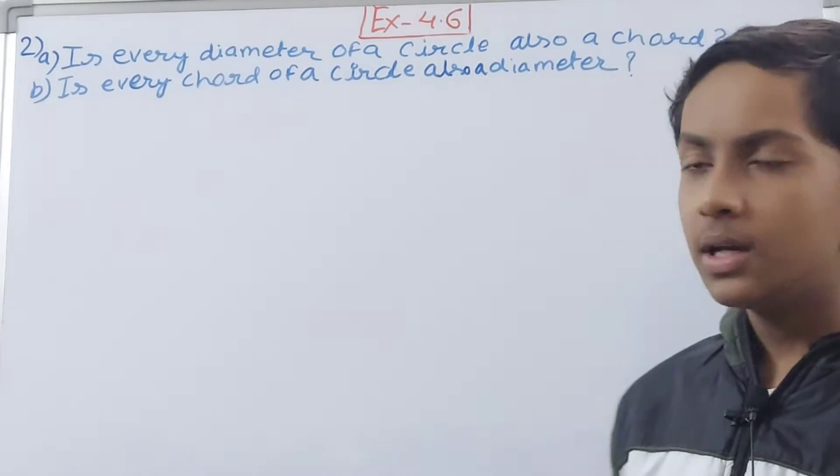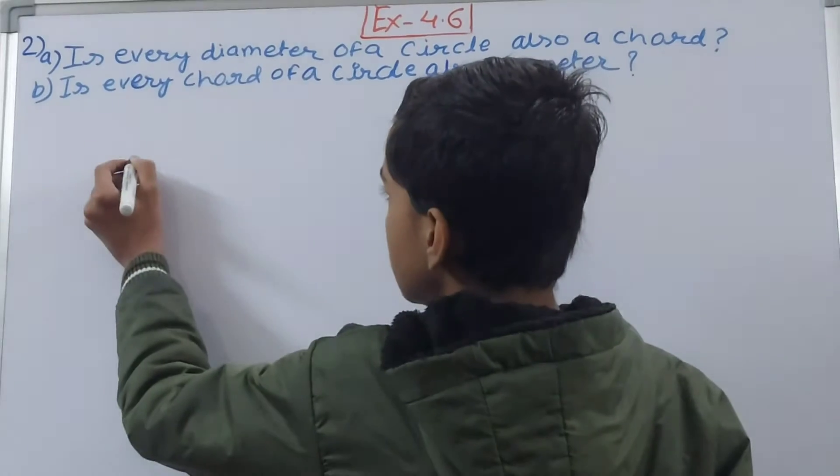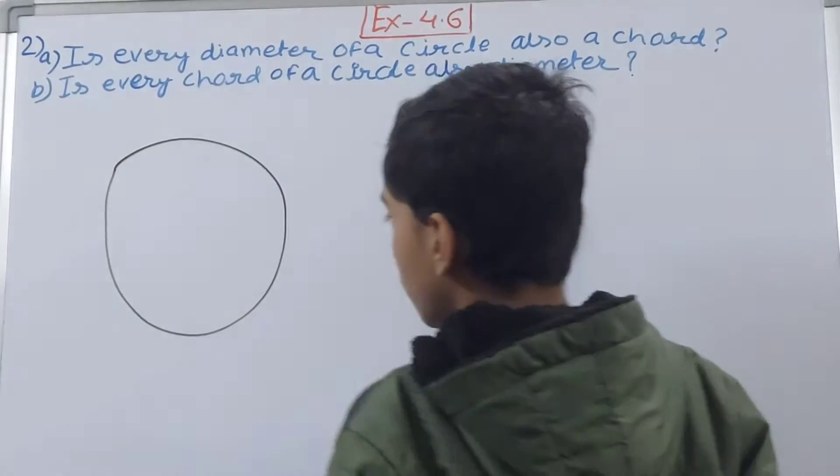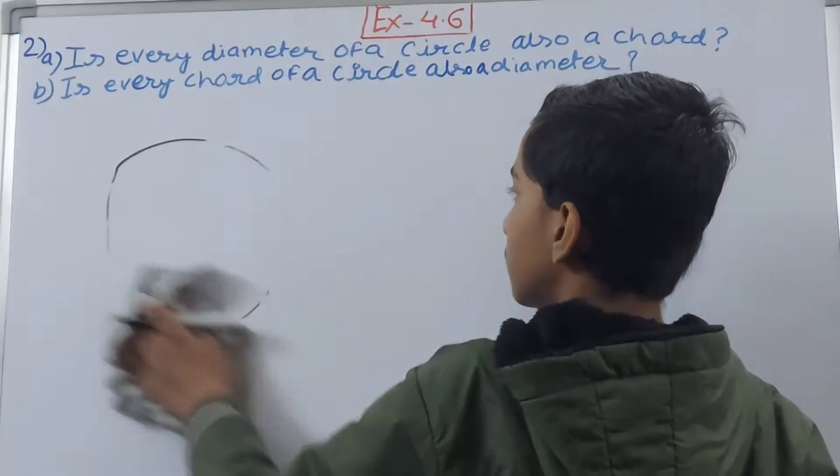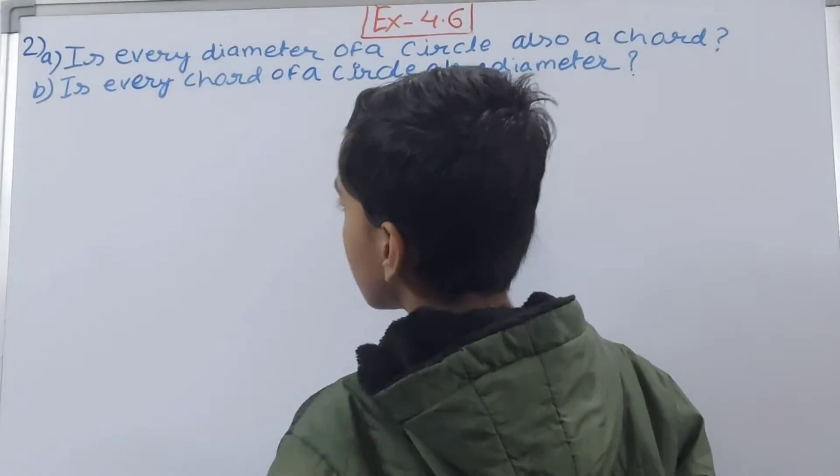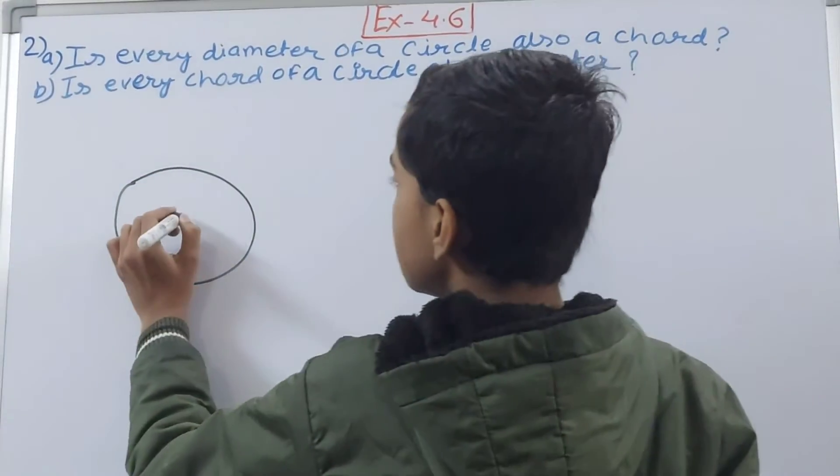First is, is every diameter of a circle a chord? Let us make a circle first. Okay, this is our circle.